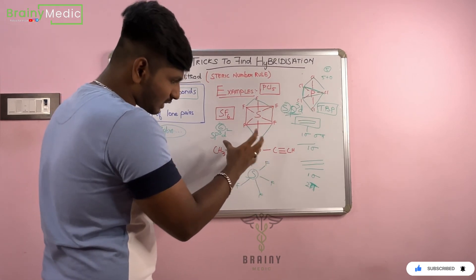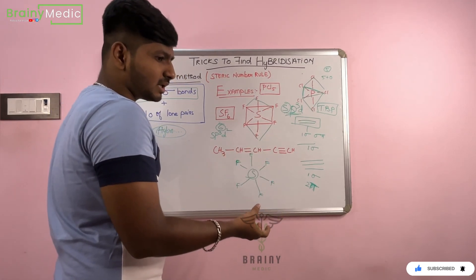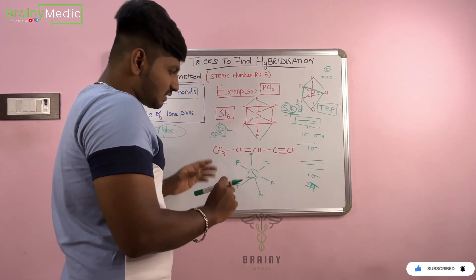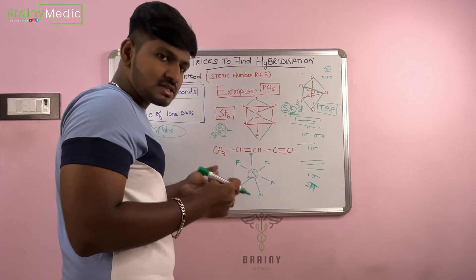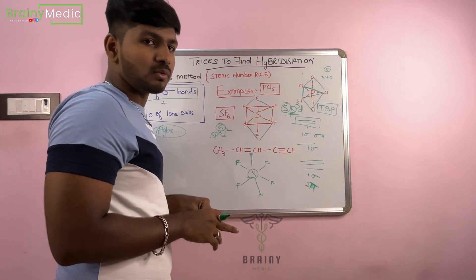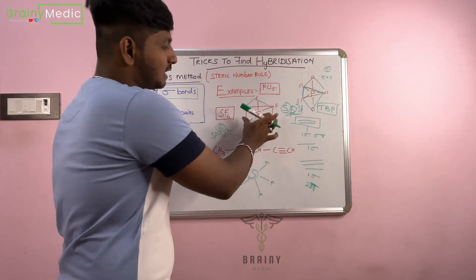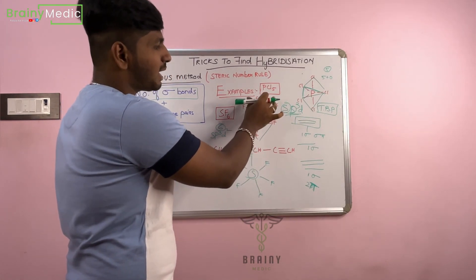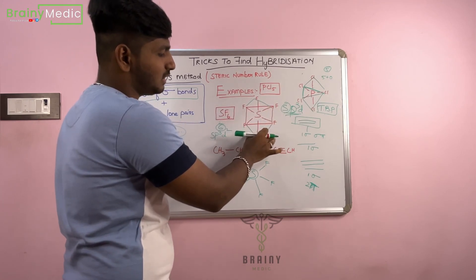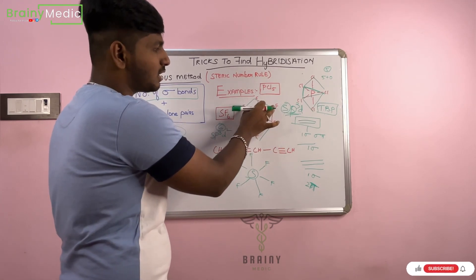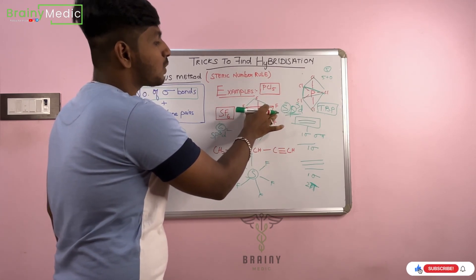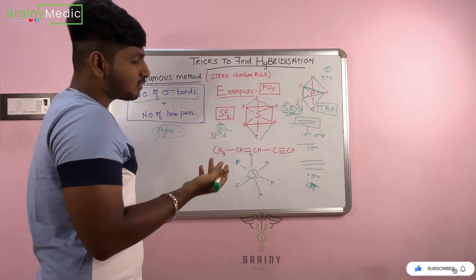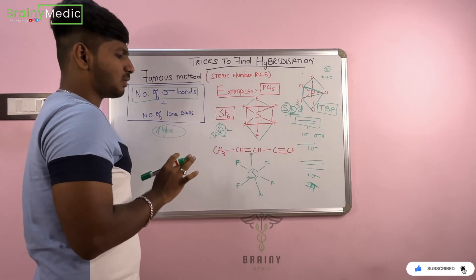This is a conventional method and the easiest way. Here, square bipyramidal. This is a very easy method.